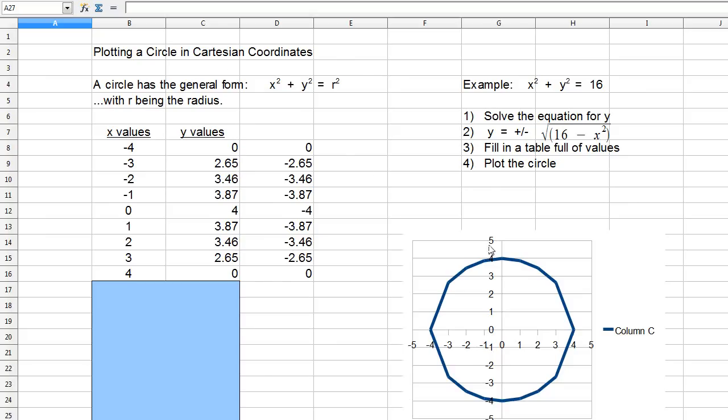So what I've done to plot the circle is solve the equation. Here's the equation solved: y = ±√(16 - x²). If you don't recognize how to do that, basically I took x² and subtracted it from both sides.